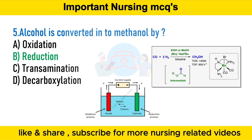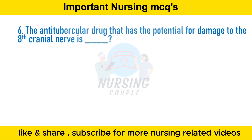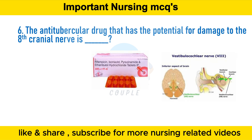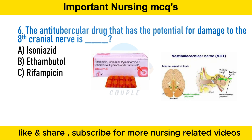The antitubercular drug that has the potential for damage to the eighth cranial nerve is: option A isoniazid, option B ethambutol, option C rifampicin, option D streptomycin.